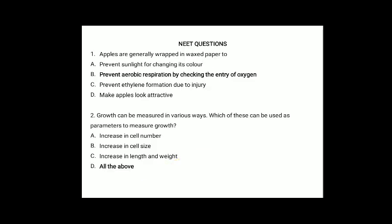Practice question 1: Apples are generally wrapped in waxed paper to — (a) prevent sunlight from changing color, (b) prevent aerobic respiration by checking entry of oxygen, (c) prevent ethylene formation due to injury, or (d) make apples look attractive. The correct answer is option B: prevent aerobic respiration by checking the entry of oxygen. Question 2: Which of the following is used as a parameter to measure growth — (a) increase in cell number, (b) increase in cell size, (c) increase in length or weight, or (d) all of the above? The correct answer is option D: all of the above.